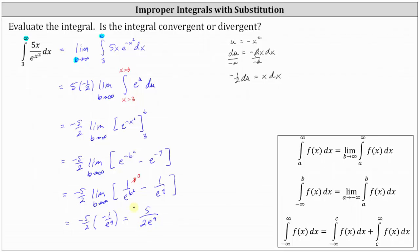Because the limit exists and we got a real value for the improper integral, we see the integral converges. If the limit didn't exist or approached positive or negative infinity, we would say the integral diverges. But in this case, the integral converges. I hope you found this helpful.